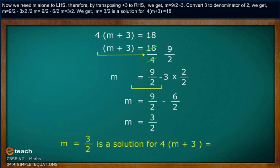We get m equals 3 by 2 is the solution for 4(m + 3) equals 18.